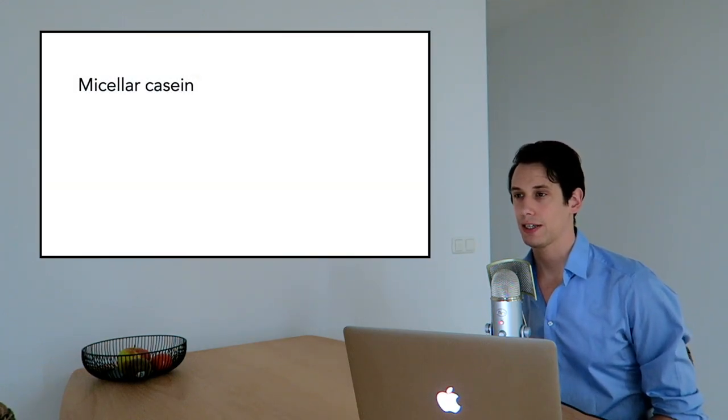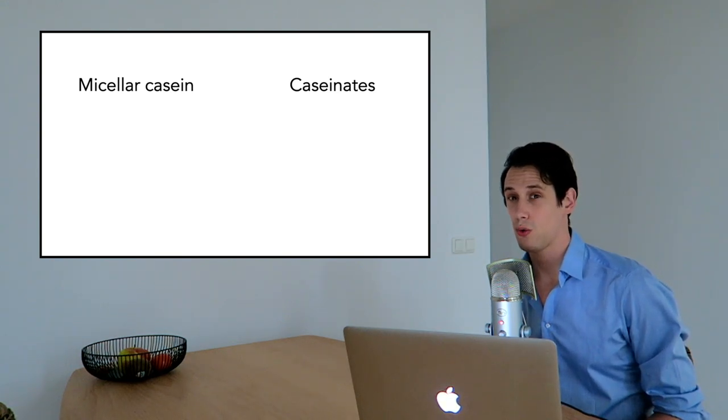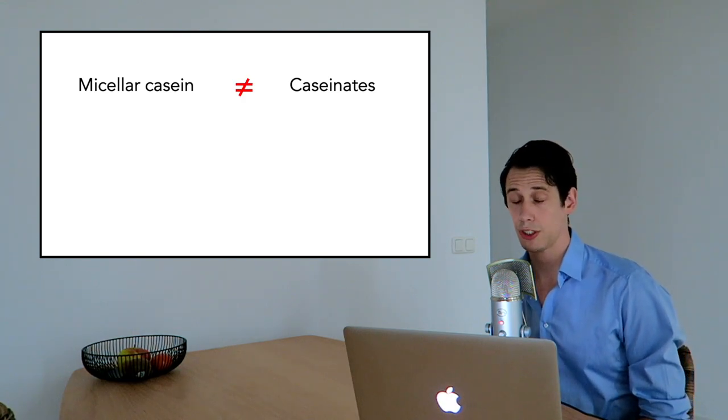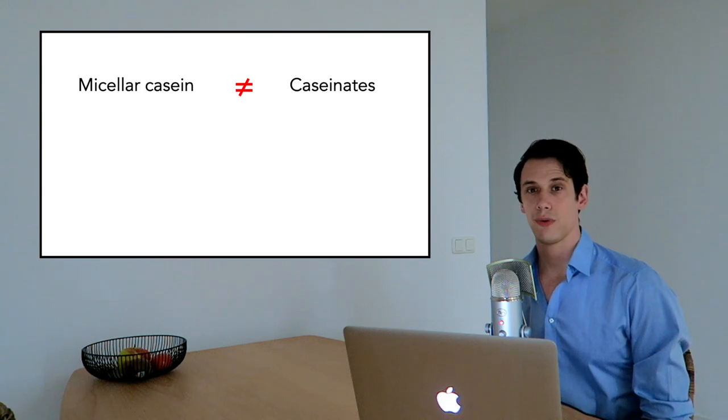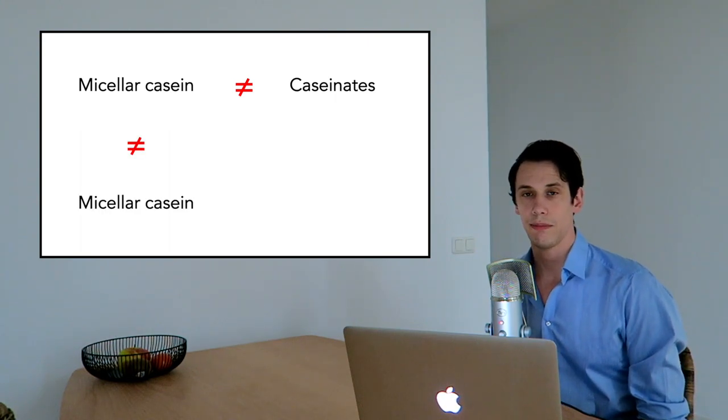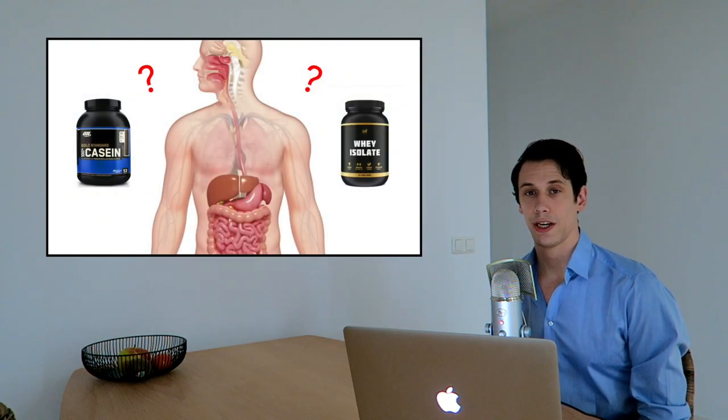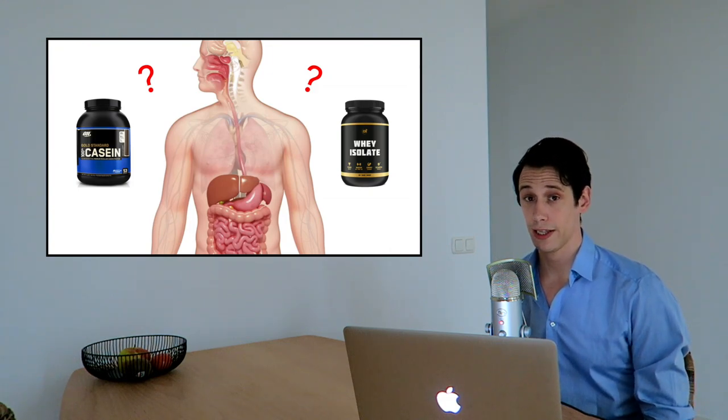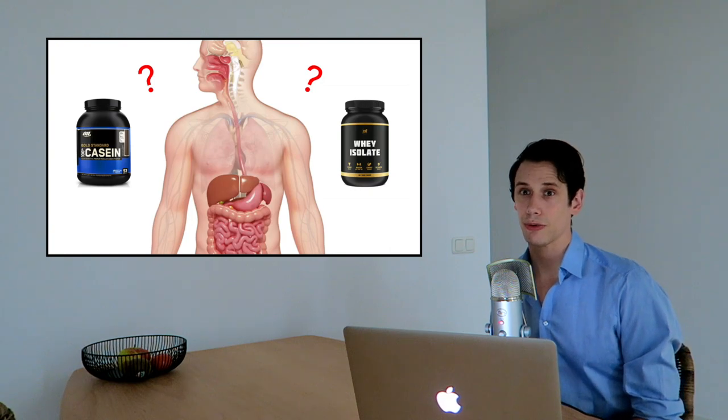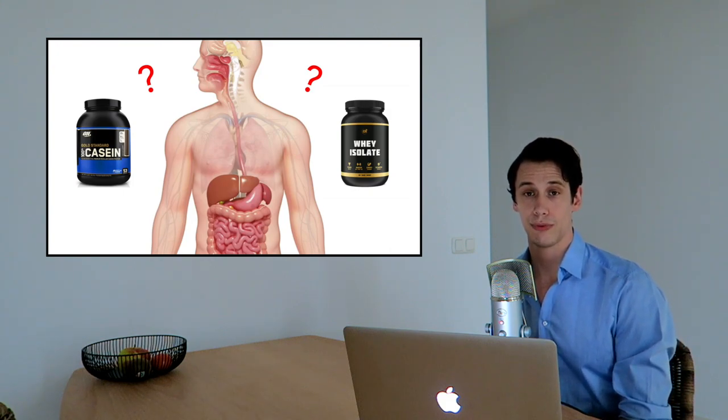So taking everything together, it seems that one, different types of casein proteins, so micellar casein and different caseinates, all digest at a quite different rate, even though they all seem very similar to each other. And two, even when we look at the same protein, so micellar casein, it seems that even that protein behaves very inconsistent from study to study. But in other words, you cannot assume that the digestion and absorption of a protein will always be exactly what you expect. So it might be a generally slow protein, but it can be quicker or slower depending on its production and processing conditions.